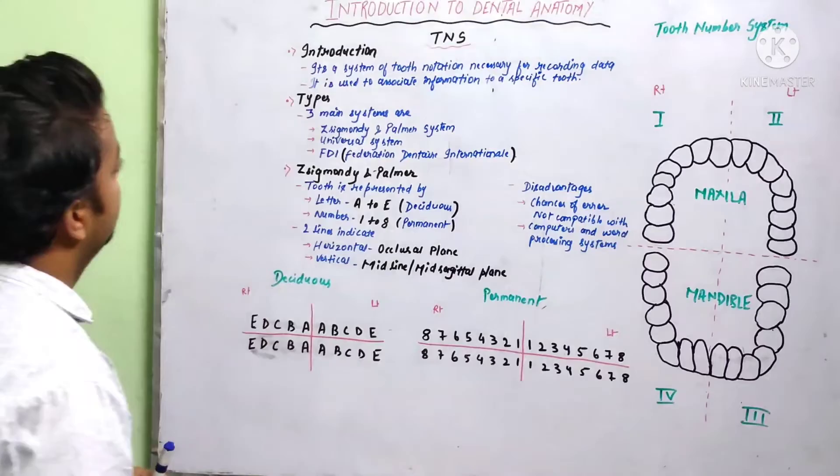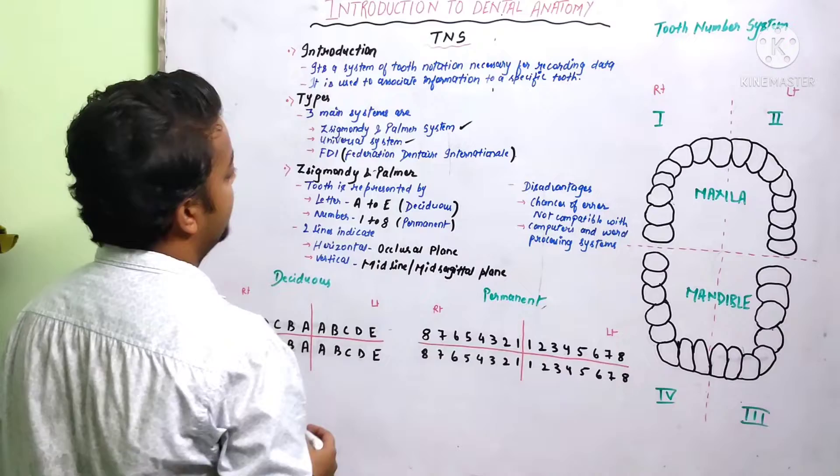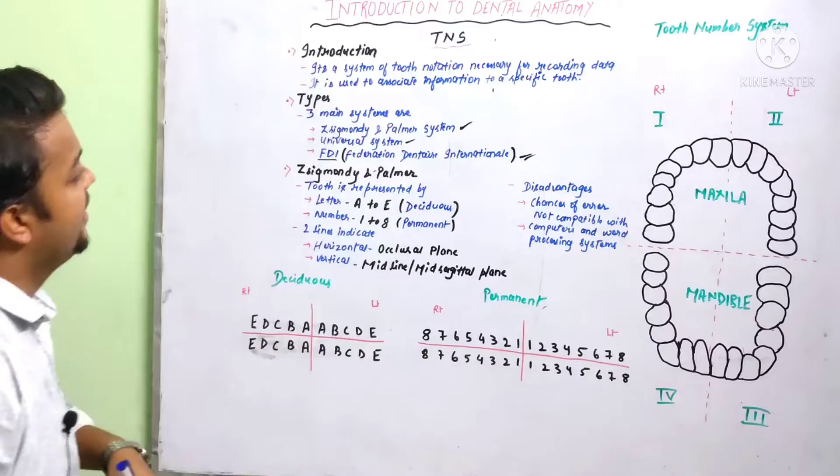Today I'll talk about the tooth number system. I'll be covering the three main systems: the Zsigmondy and Palmer, the Universal system, and the FDI, that is Federation Dental International.